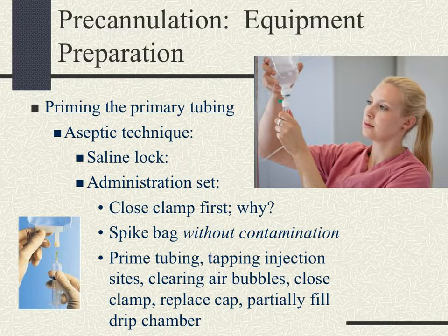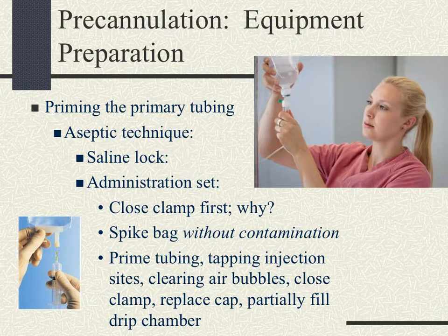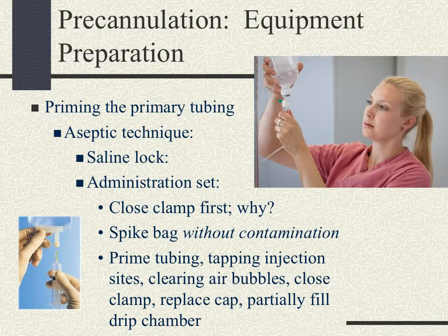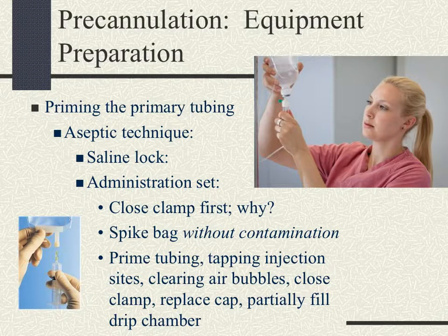Continuing to prepare the equipment, you'll need to prime the primary tubing. This is an aseptic technique, so we want to make sure we're not touching any parts of the tubing or the container where entry is at risk. For the saline lock, avoid touching the hubs to ensure no contamination. For the administration set, close your clamps first — because as you prime, that fluid will go through the tubing and you will leak fluid everywhere if your clamps are not closed.